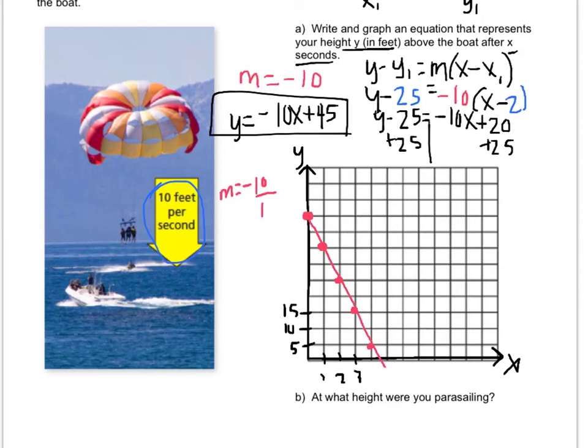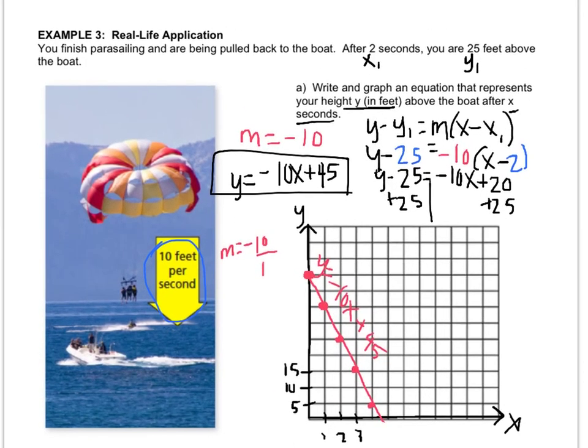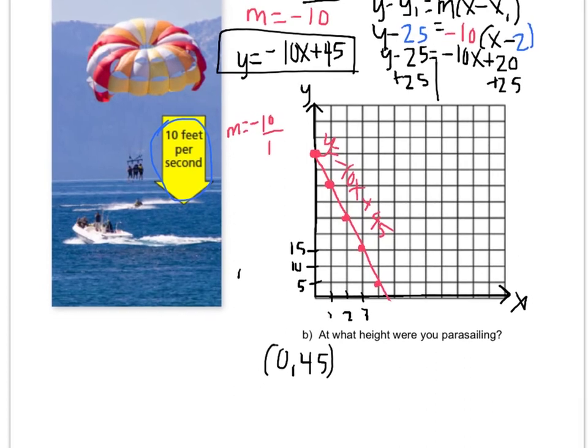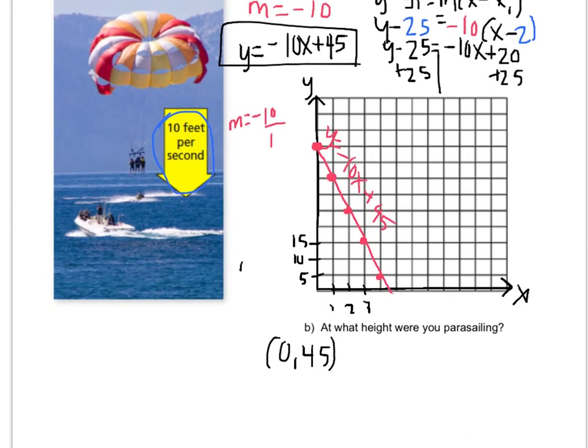Connect it. Oh, whoops, don't go into the negatives. And label the line: y equals negative 10x plus 45. At what height were you parasailing? Well, you started parasailing right here at this point, which is the point (0, 45). So that means that 0, 45 represents 0 seconds have passed. So you are 45 feet at the beginning. If you have any questions, write them down and ask me when you see me next.